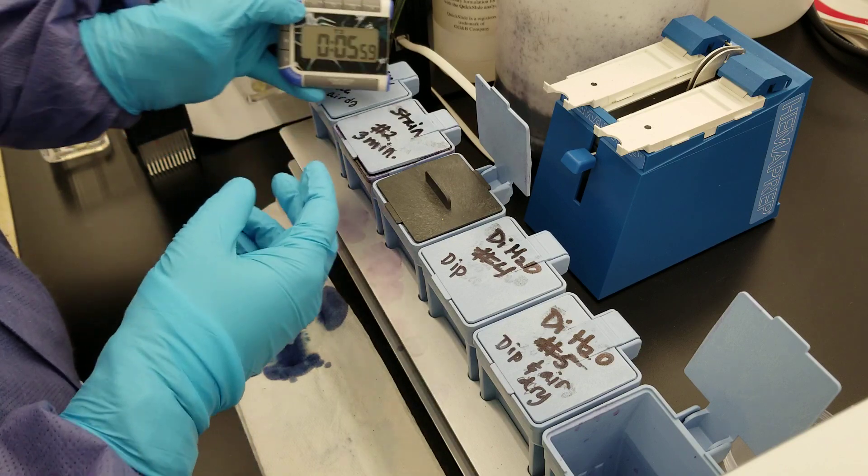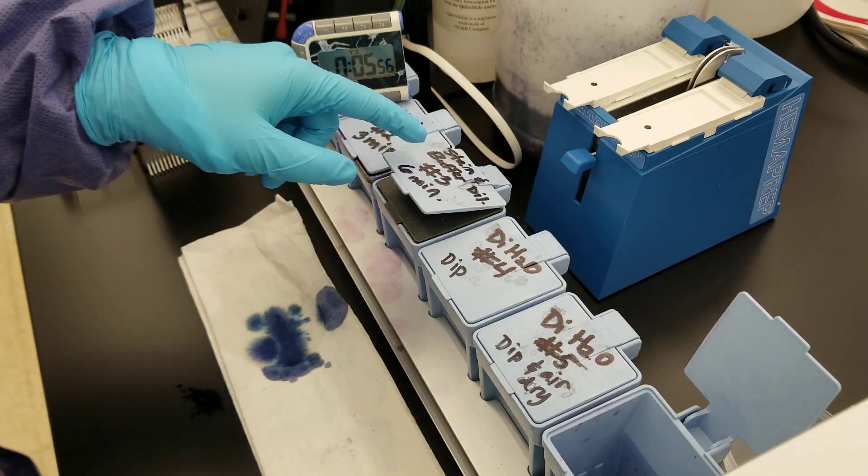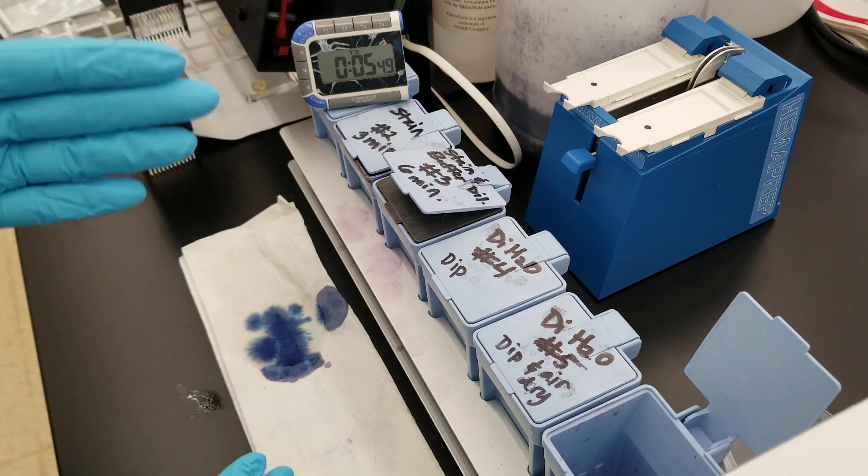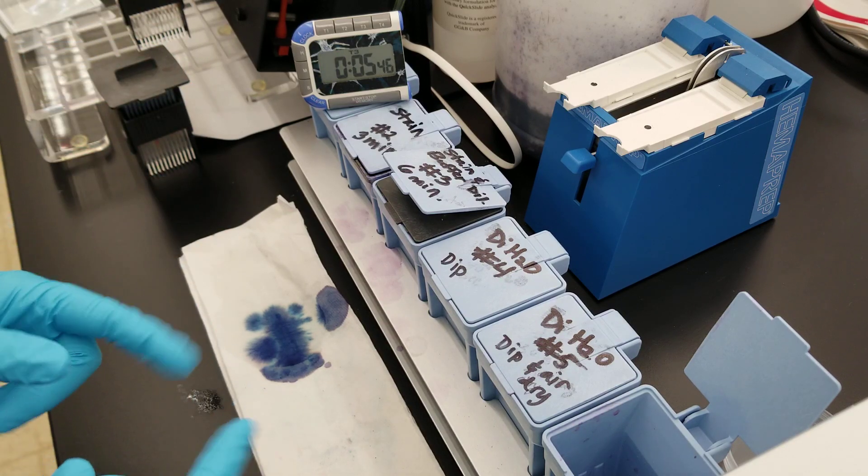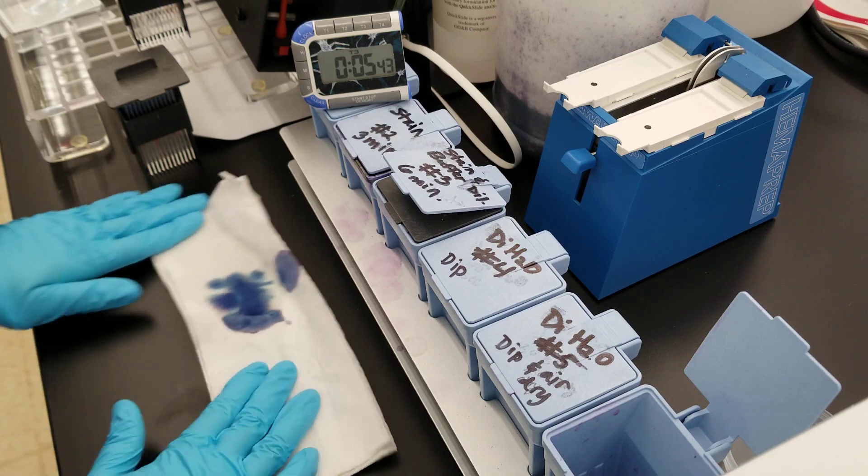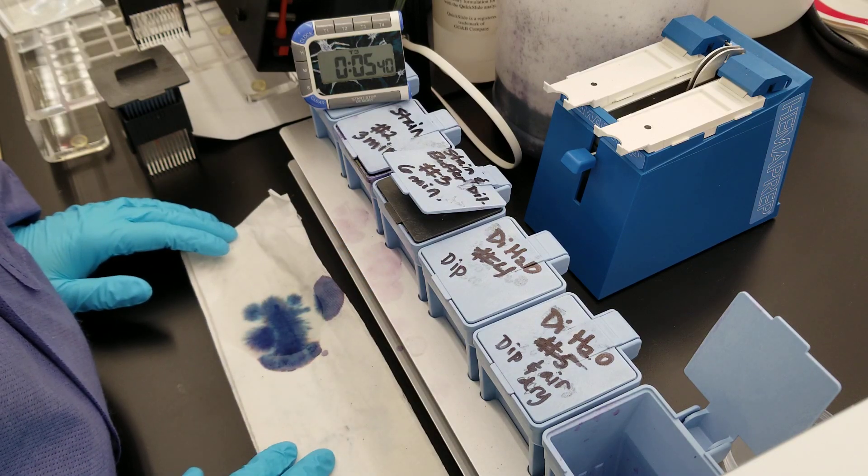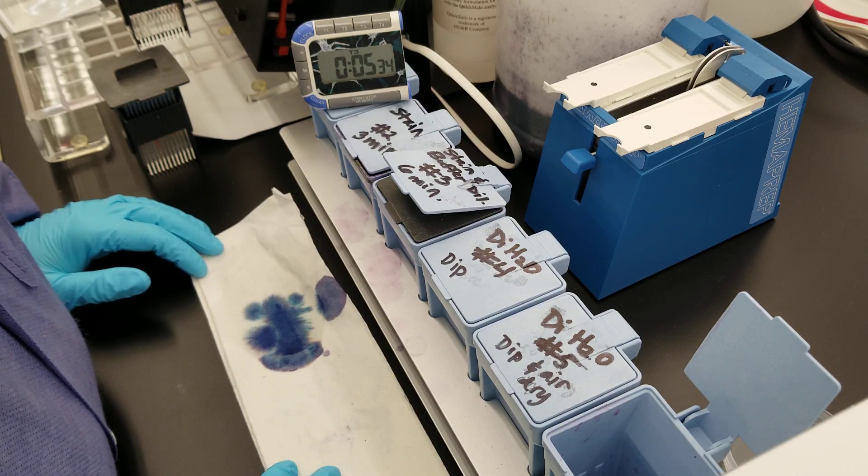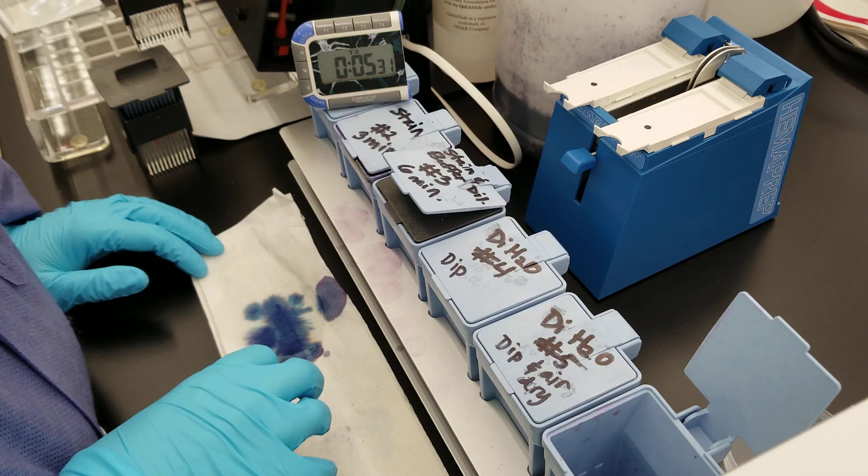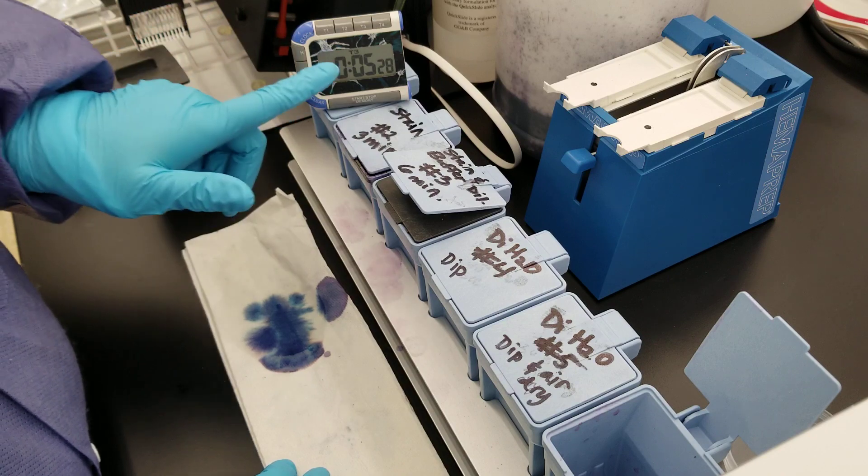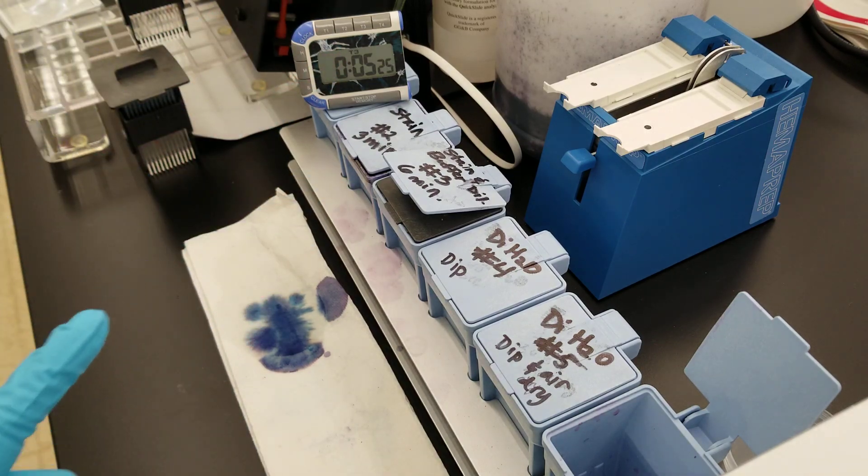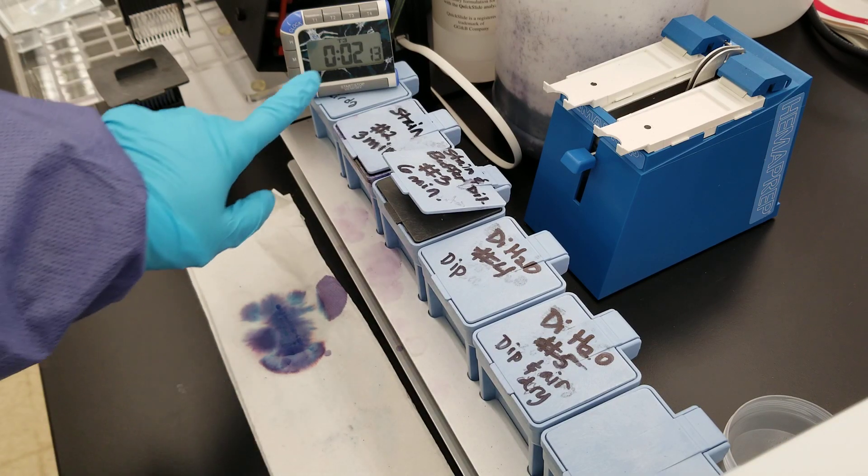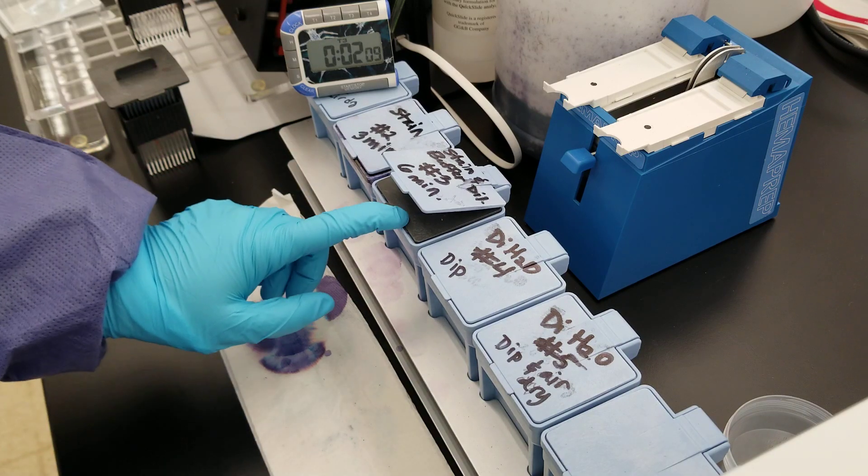And press start. This is the stain and buffer diluent together. A buffer keeps your solution in a pH range that is desired. That's what's happening here. We're keeping it in the desired pH to make sure the cells are appropriately taking up the stain to wherever it is, whether it's the cytoplasm or the nucleus. This is six minutes. I'm not going to sit here and have you watch six minutes, so I'll pause it and be back.